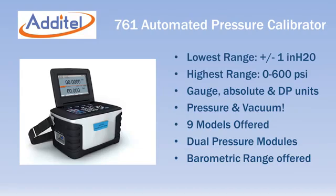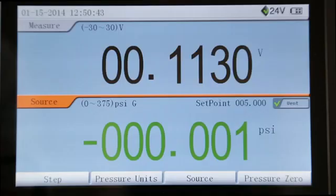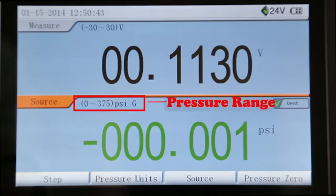The 761 is manufactured in 9 different models that cover gauge, absolute, and differential pressures and vacuum from one inch of water to 600 psi. Each 761 has two internal pressure sensors to provide accurate measurement over a wide range of pressure and vacuum.